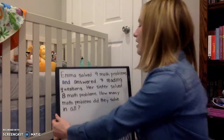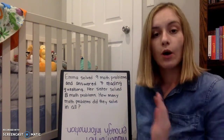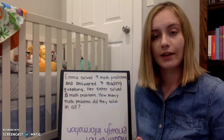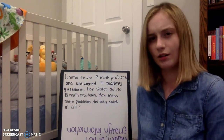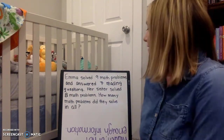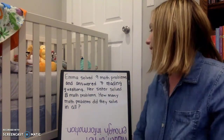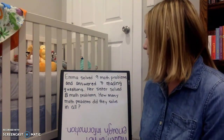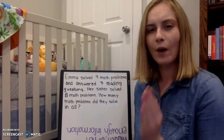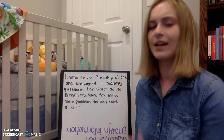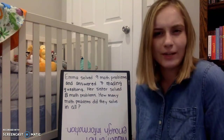Here is our first problem. This one we're going to be thinking about extra information. While we read it and do it together, think about what in here is extra and what is not needed at all. Emma solved nine math problems and answered seven reading questions. Her sister solved eight math problems. How many math problems did they solve in all? What part of this problem is unnecessary? It has nothing to do with our answer — it's just extra information that we don't need.